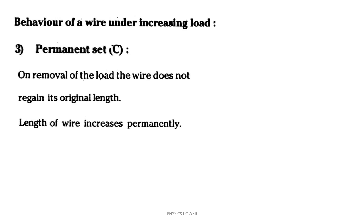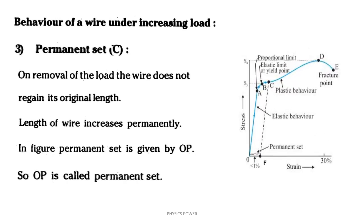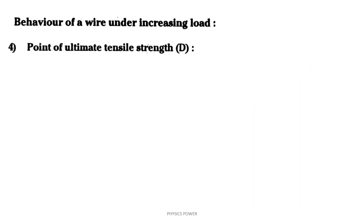If we cross the permanent set point — marked as point C in the figure — we can observe the permanent set point in the diagram. The proper limit is not equal to B. At a certain crossing point, with the load, we get the same element. There is the ultimate tensile point, which represents the maximum load that can be applied to the wire.